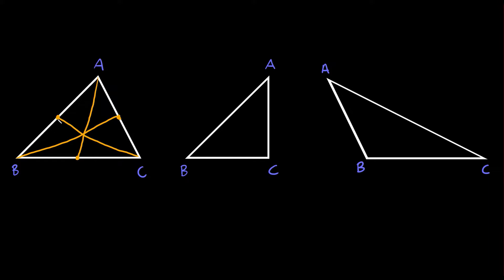Now when three or more lines like these intersect, we say that they are concurrent, and the point of concurrency — or the point where they all intersect — for medians is called the centroid. This point right here where they all intersect is called the centroid, and fun fact, it's also known as the center of gravity.